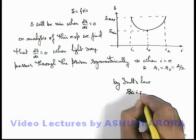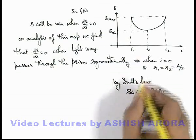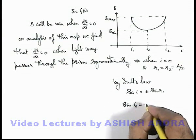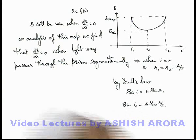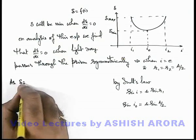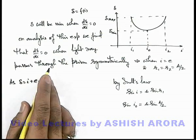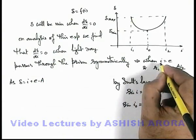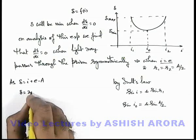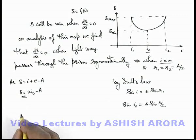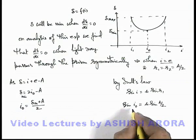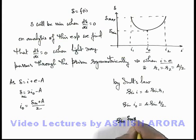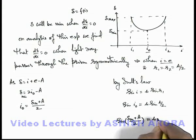From Snell's law we have sine i equals mu sine r1. Substituting i as i-naught (the incidence angle at minimum deviation): sine(i-naught) equals mu sine(A/2). The minimum deviation value is calculated as: the deviation angle delta equals i plus e minus A, and since at minimum deviation i equals e equals i-naught, delta-minimum equals 2·i-naught minus A. Therefore i-naught equals (delta-minimum plus A) divided by 2. Substituting this into Snell's law gives: sine((delta-minimum + A)/2) equals mu sine(A/2). This is the key expression to calculate minimum deviation from the prism angle and refractive index.